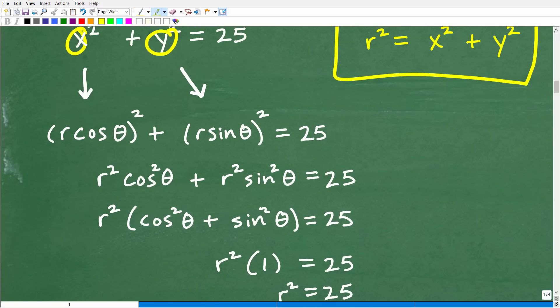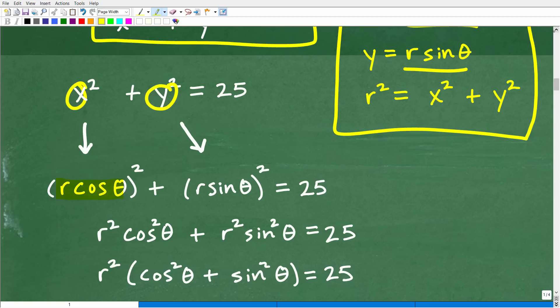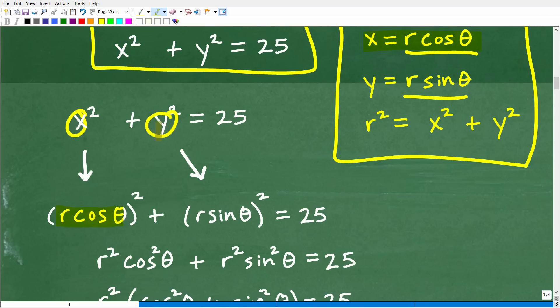So x squared, let me move up here so we can see everything, x squared is the same thing as r cosine theta squared because that is what x is equal to. y squared is the same thing as r sine theta squared because y is equal to r sine theta. What we're doing is we're going from x's into polar form. We're going from rectangular into polar form by replacing the x and y's with their polar form equivalents. So r cosine theta squared plus r sine theta squared is equal to 25. So let's go ahead and simplify that.